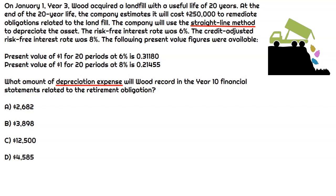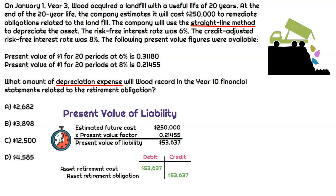We know that it's estimated to cost $250,000. We just need to take the present value of that. Since we're doing it over a 20-year period, and we always use the credit-adjusted risk-free rate, we're going to use the present value factor at the 8% rate. The present value of $1 for 20 periods at 8% is 0.21455. So when we multiply $250,000 by that present value factor, that tells us the initial liability to be recorded is $53,637. Our journal entry would be to debit asset retirement costs for $53,637, and then credit asset retirement obligation for the same amount.